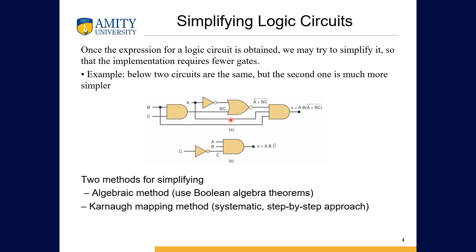Instead of having four gates — AND, NOT, XOR, and AND gate — we can reduce it to just two gates. This can be done by understanding the inputs and corresponding outputs, then deciding which gate can be used. There are two methods: first is the algebraic method, where you use Boolean algebra to solve it; second is K-mapping.